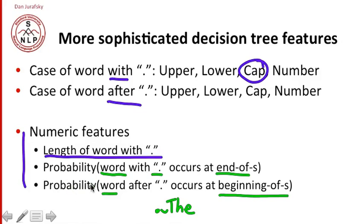So this will have a high probability of being a start of a sentence. And we can use these kind of features, conditioned on each of the words, to help us in deciding what is or isn't an end of sentence period.